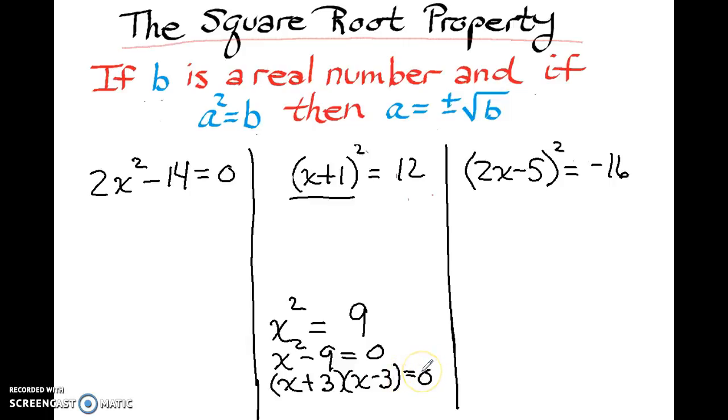And then to solve for our variable, we set each of our factors equal to 0 and solve. So we get x equals 3 and negative 3.